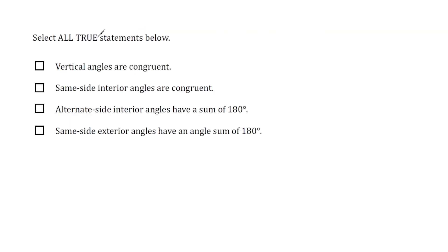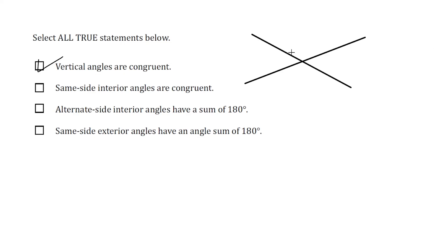We have to select all true statements. The first statement says vertical angles are congruent — that's true. We select that choice because whenever you have intersecting lines, the angles formed on opposite sides are identical in angle measure.